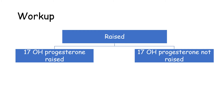We check the level of 17-hydroxyprogesterone — whether it is raised or not. If the level is raised, that is greater than 800 ng per deciliter, then we can say that the person is suffering from late onset congenital adrenal hyperplasia.